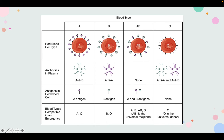There will be questions on your homework and lecture quizzes related to this, so get this straight: O can give blood to anybody; AB can receive blood from anybody; AB cannot give blood to anybody unless it's AB; and O cannot receive blood from anybody unless it's O.